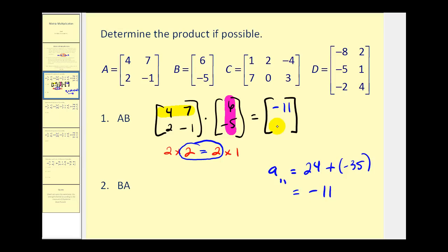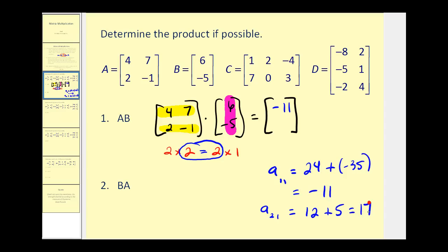In order to determine the next element — this is in row two, column one — we'll multiply row two in the first matrix times column one of the second matrix. So we'll have two times six, that's twelve, plus negative one times negative five, that's positive five. So the element in row two, column one is equal to seventeen. And there's the product of those two matrices.